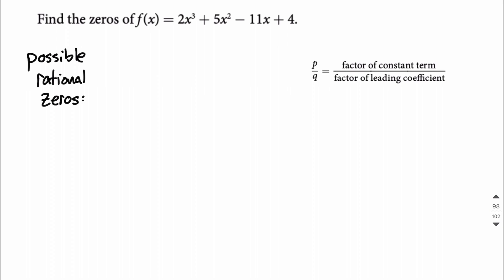So the possible rational zeros are going to be given by factors of the constant term, in our case 4, that last term, over factors of the leading coefficient, 2. So factors of 4 go as 1 times 4 would make 4, or 2 times 2, but I'm only going to list one of those. And then 2, we can get that by 1 times 2, or 2 times 1, but we only need one copy.